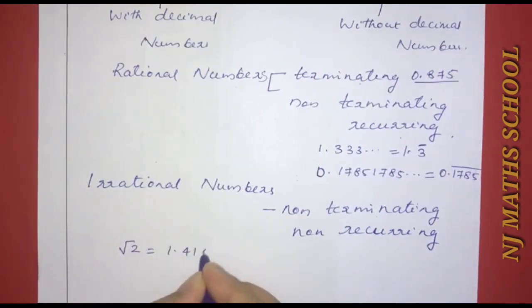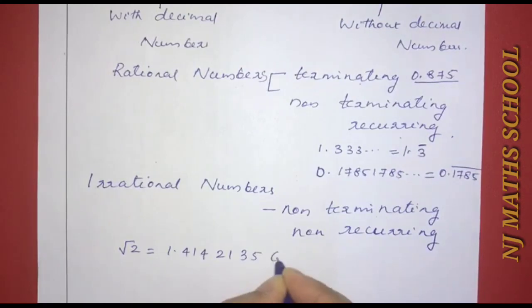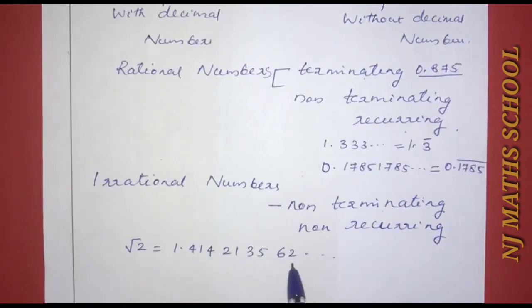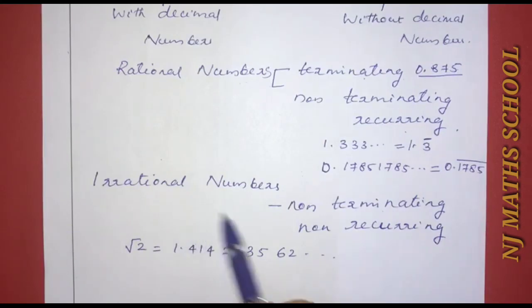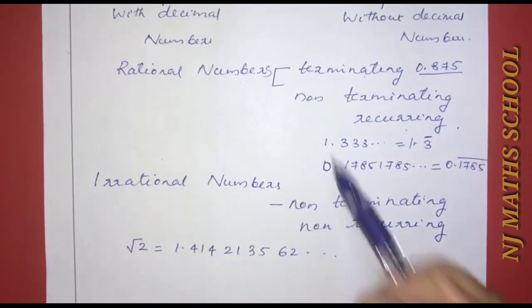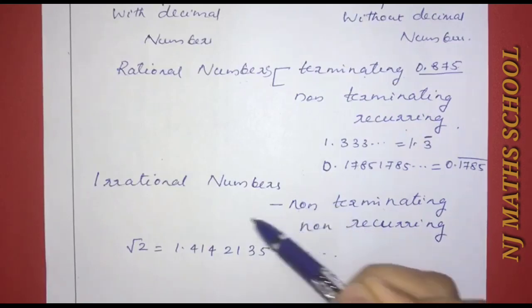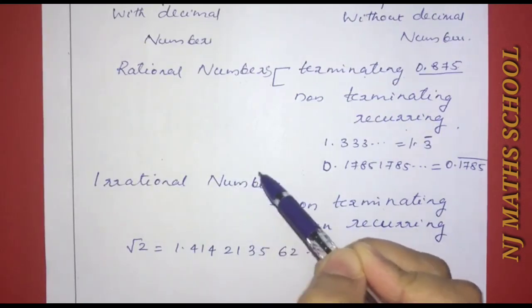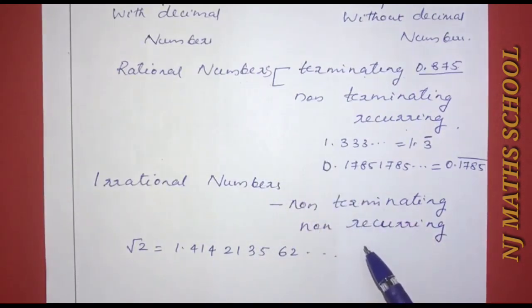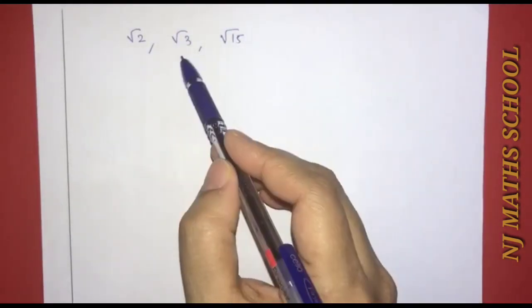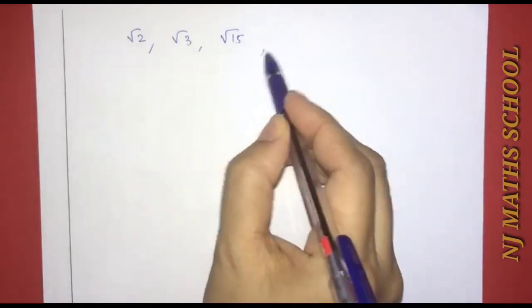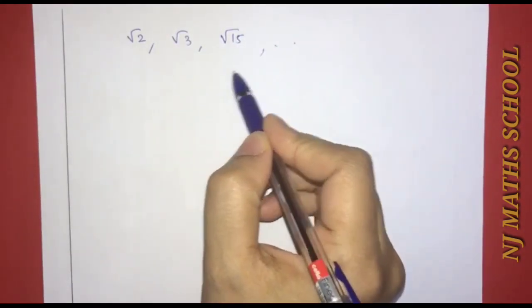For example, √2 = 1.414213562... and so on. The digits are non-terminating and non-recurring. Numbers like √2, √3, and √15 are irrational numbers.